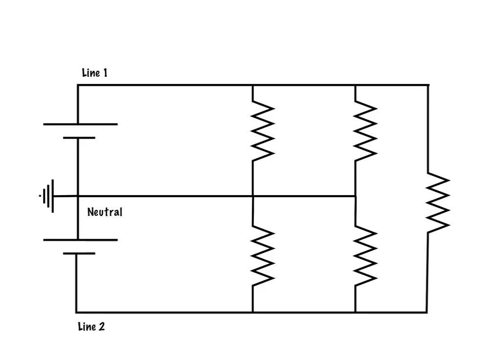Now, the way we get these voltages is we have this neutral, and this neutral is connected to ground, which is why we call it the grounded conductor.